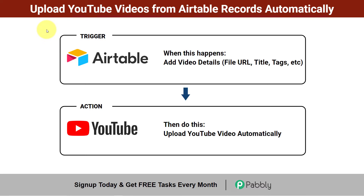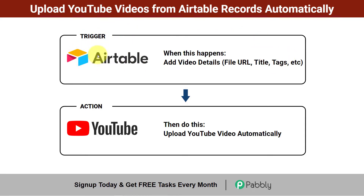Hey everyone, this automation is very useful for all YouTubers because today I'm going to show you how to upload YouTube videos from Airtable records automatically. Whatever video you would like to publish on your YouTube channel, simply add its file URL, title, tags, and description into the Airtable account, then connect Airtable with YouTube using automation software, and the videos will be uploaded automatically on your YouTube channel.